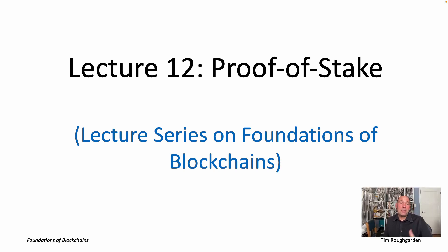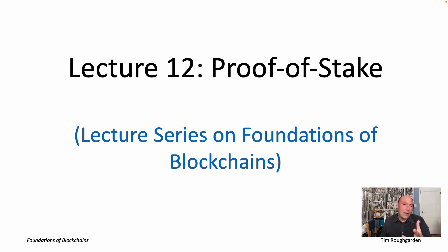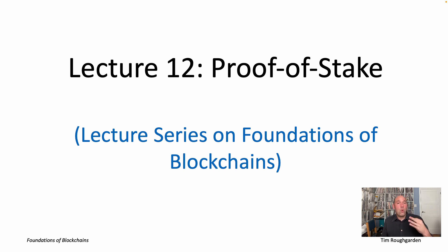Given that the point of proof of stake Sybil resistance is to enable permissionless consensus, it makes sense to have freshly loaded in our minds all of the key challenges that arise in permissionless consensus. You have two options: you can go back and rewatch the first video of lecture nine, where we talk about permissionless consensus and its challenges in detail, or you can watch the rest of this video for a very brief review using the same slides.